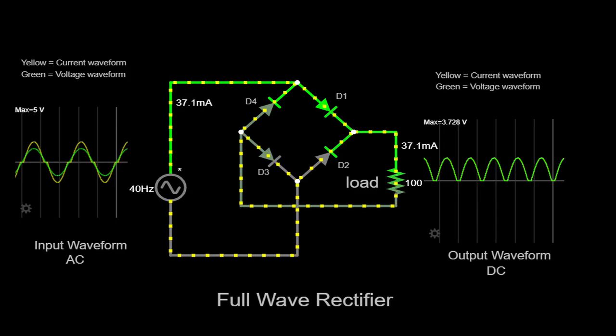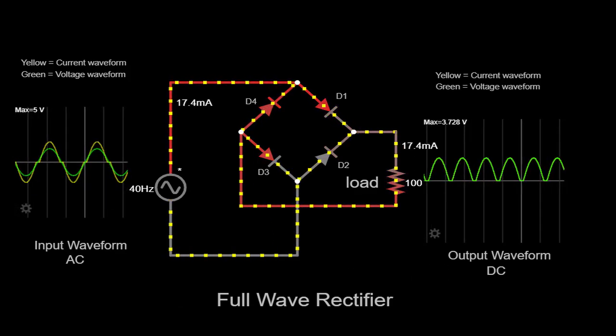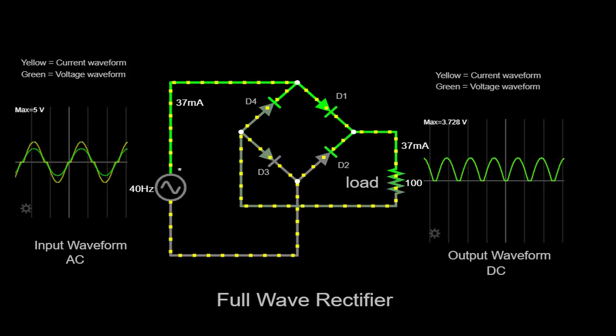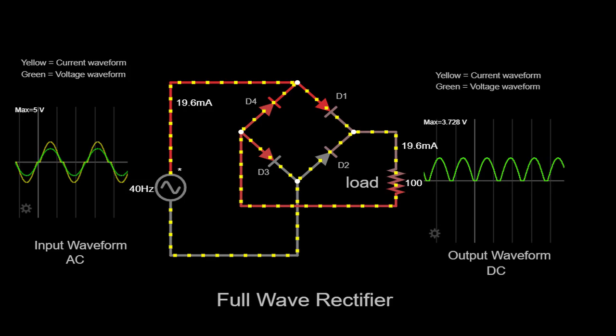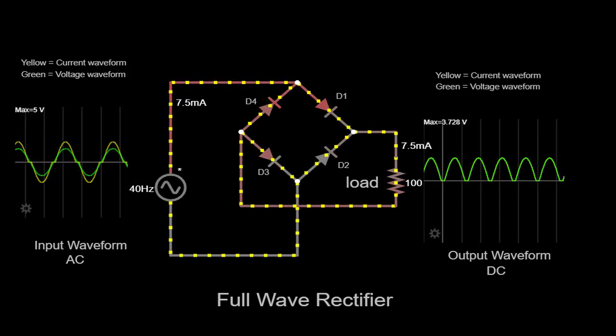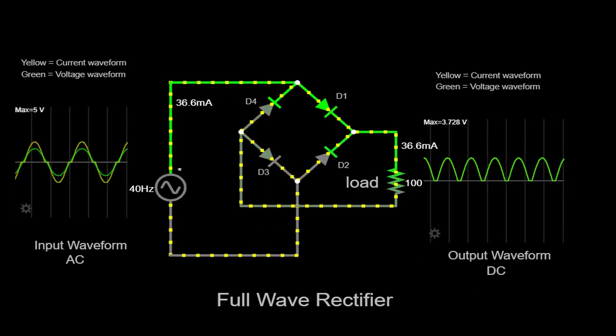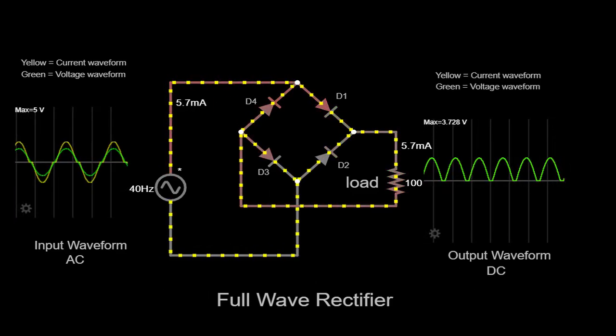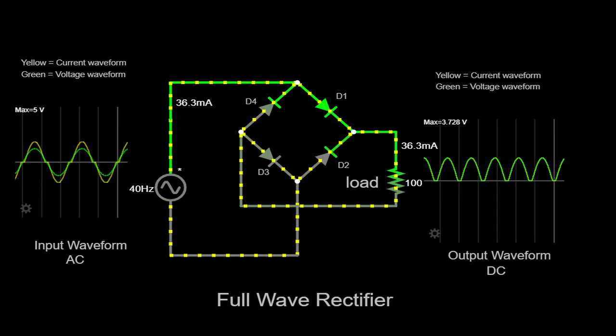Hello everyone, and welcome to today's video where we will dive deep into the working principles of a full wave rectifier. We'll explore the inner workings of this circuit and understand how it effectively converts alternating current (AC) into direct current (DC). To provide a visual representation, we'll be using a simulator that will showcase the input and output waveforms on a scope. So, let's get started.